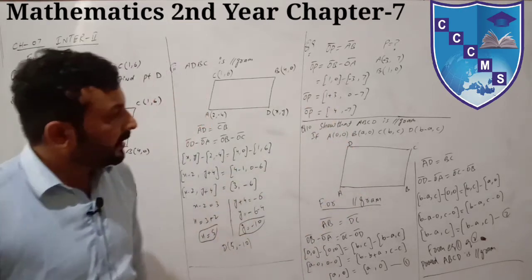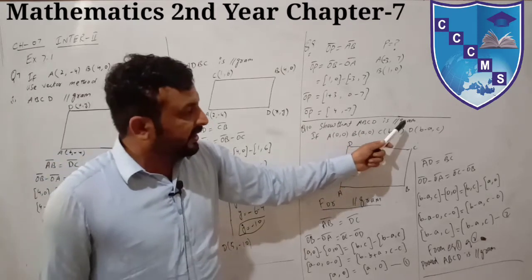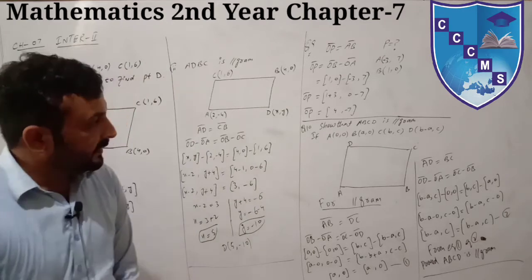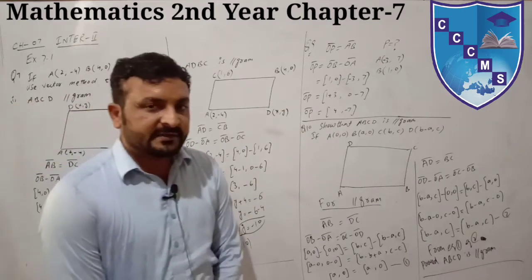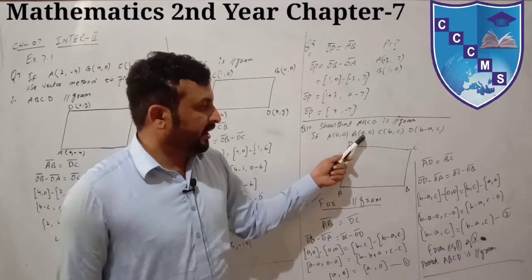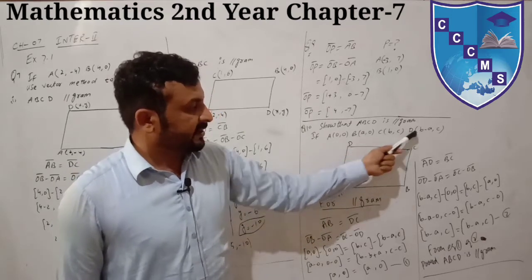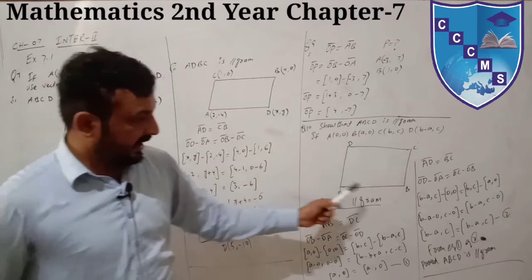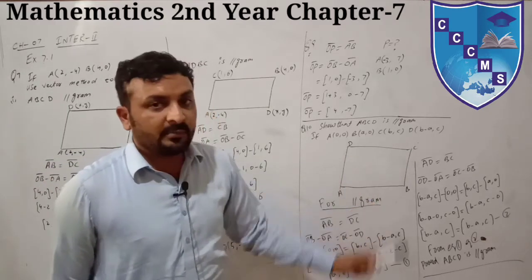Question number 10: Show that A, B, C, D is a parallelogram. You have to prove this for four given vertices. A is (0, 0), B is (a, 0), C is (b, c), and D is (b minus a, c). Prove A, B, C, D is a parallelogram.